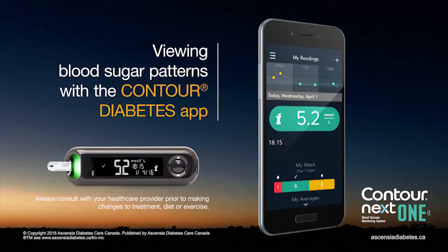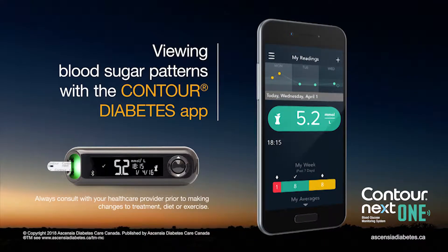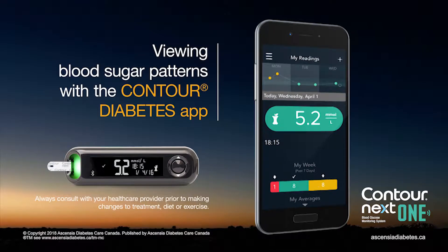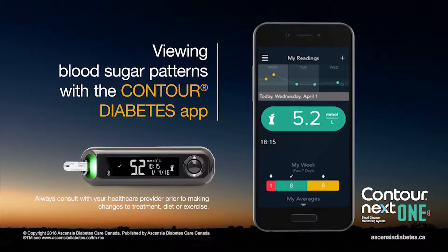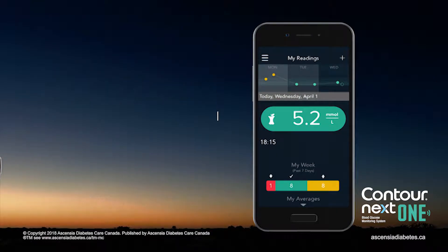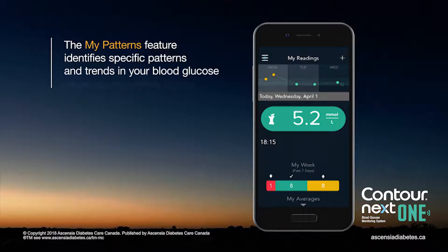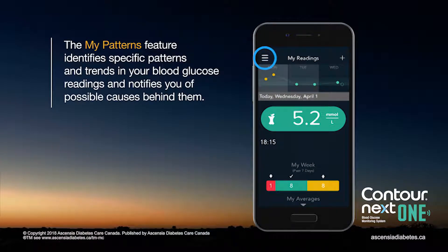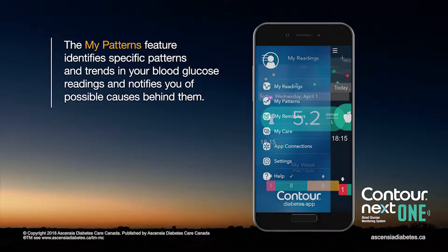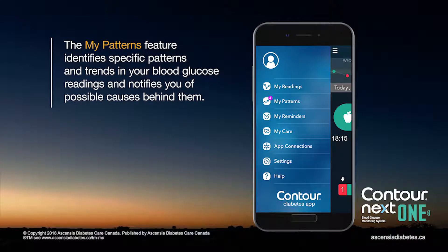This video will show you how to view your blood sugar patterns with the Contour Diabetes app. The My Patterns feature identifies specific patterns and trends in your blood glucose readings and notifies you of possible causes behind them.